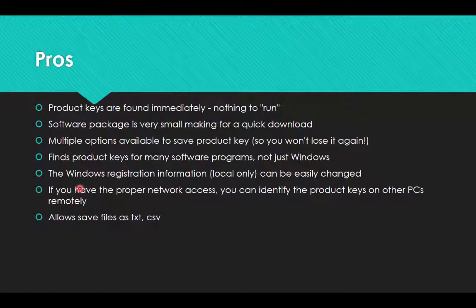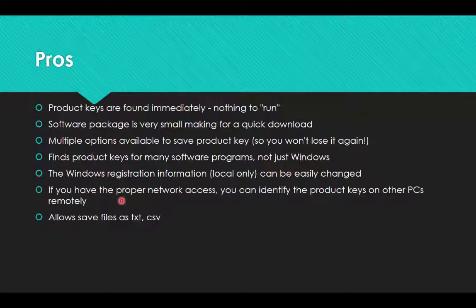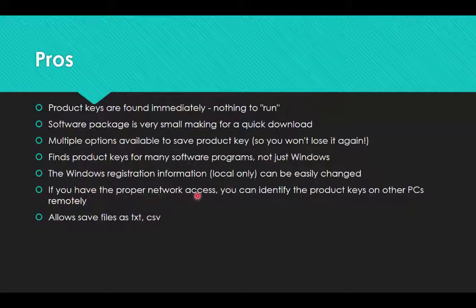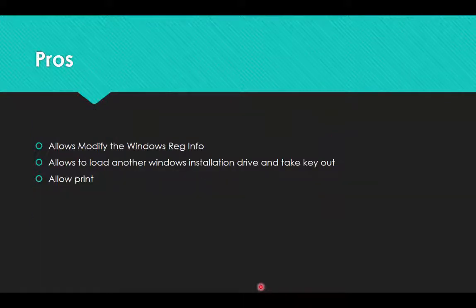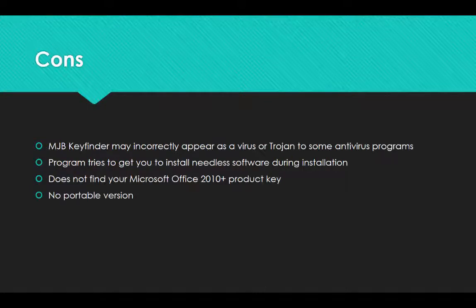The Windows registration information can be easily changed — you can change some aspects of the registry. It's pretty limited though, so don't think you're going to hack the Windows registry. It'll allow you to do a couple of things but nothing major. If you have the proper network access, you can identify product keys for computers on your network by connecting to them. You can also save as TXT or CSV, modify some info, and print.